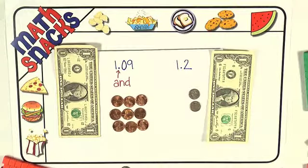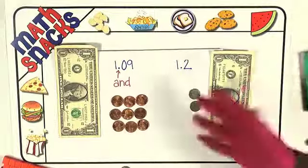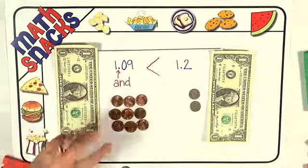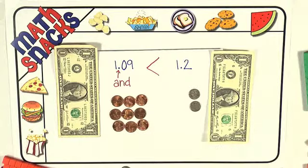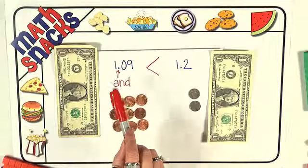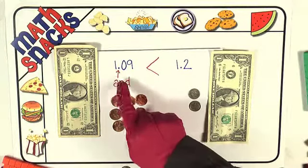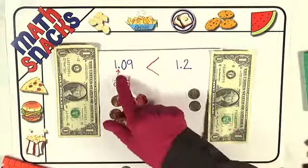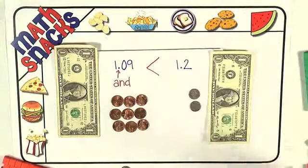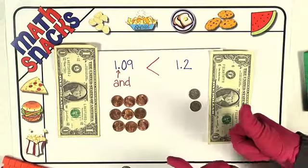So which one is the bigger amount of money? Which one do you want to have? This one's the larger. That's correct. One and two tenths is larger than one and nine hundredths. So if we were reading from left to right like we normally read, one and nine hundredths is less than one and two tenths. You get another happy face.